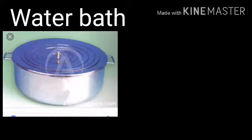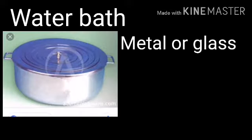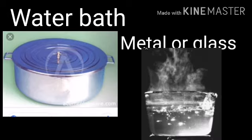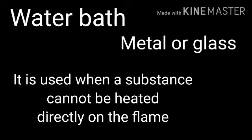Next, water bath. Water bath is made up of metal. Some substances cannot be heated directly on the flame, so a water bath is used. Water is poured into the water bath and brought to a boil. Then, the substance that needs to be heated is placed in a test tube and carefully kept in the water bath. This way we can heat the substance indirectly. So water bath is used when a substance cannot be heated directly on the flame.